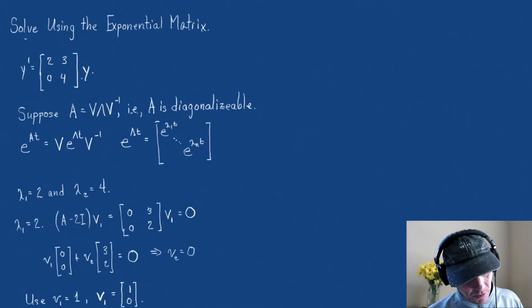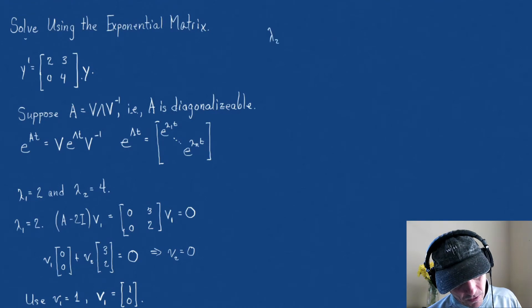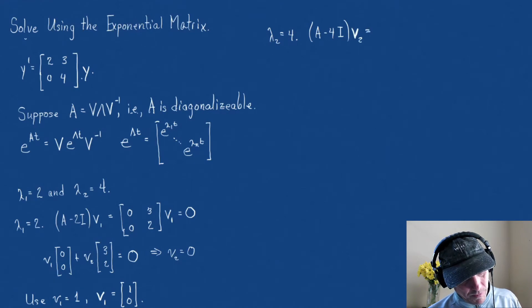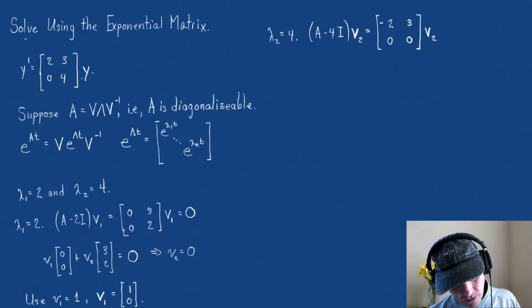Then, let's continue. So, my next one is when lambda 2 is equal to 4. So, then we're going to solve the A minus 4i times our second eigenvector, that's a V2, equals, it's going to be a 2 minus 4, that's a minus 2, 0. Then, I'm going to have a 3, and then we're going to have a 4 minus 4, that's a 0, times V2. Well, notice,